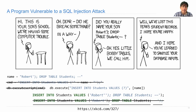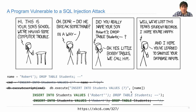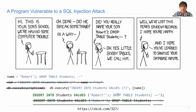This will execute a statement that's different from the three statements down here. Instead it will execute just one statement that inserts the long string — Robert, apostrophe, close paren, semicolon, drop table students, whatever — into the students table. So, little Bobby Tables will retain his true name and the students table will not be dropped.